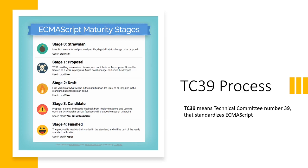Stage 3 is the Candidate stage — the feature is almost ready and can be implemented on an experimental basis. Based on feedback, there might be some changes. Once a feature reaches Stage 4, it is finalized and ready to be implemented by browsers.